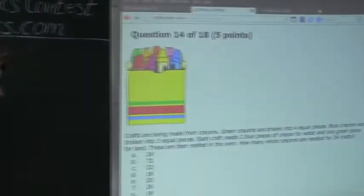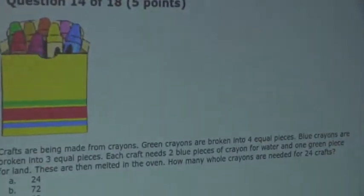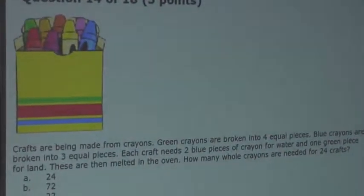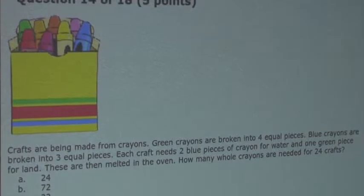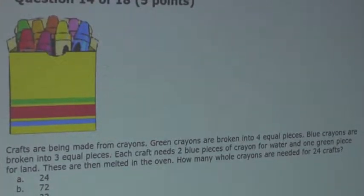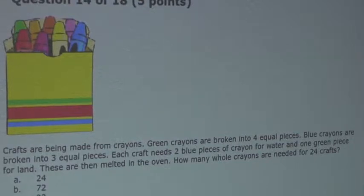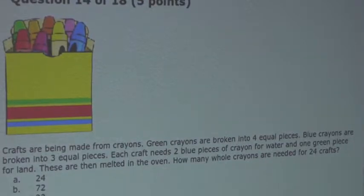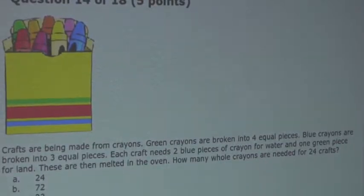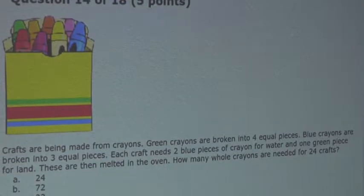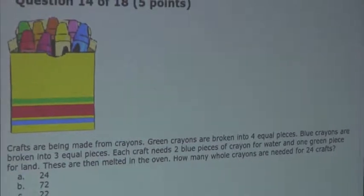Now the question is: crafts are being made from crayons. Green crayons are broken into four equal pieces. Blue crayons are broken into three equal pieces. Each craft needs two blue pieces of crayon for water and one green piece for land. These are then melted in the oven. How many whole crayons are needed for 24 crafts?